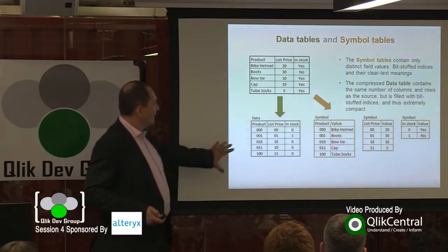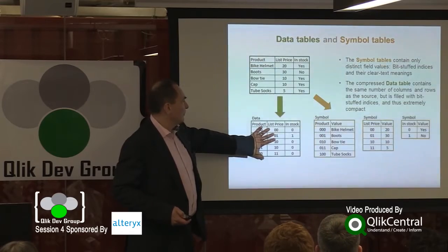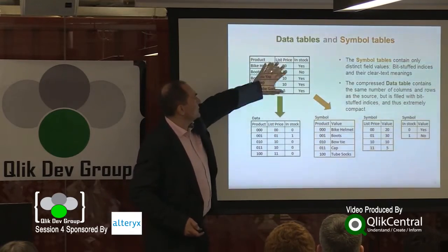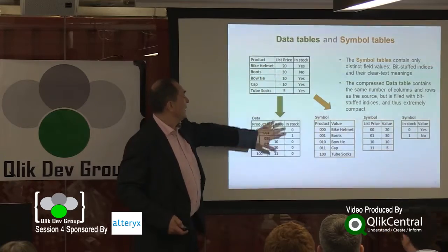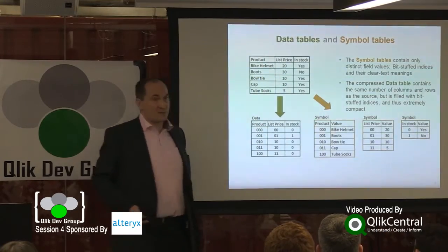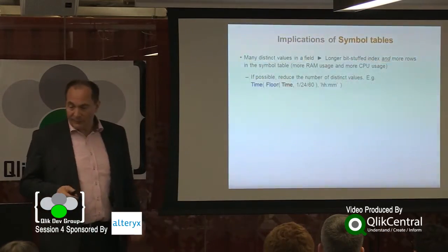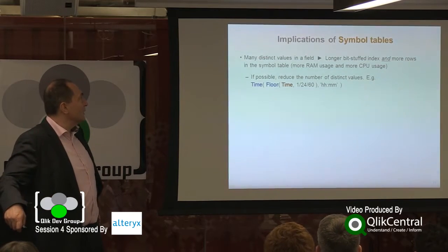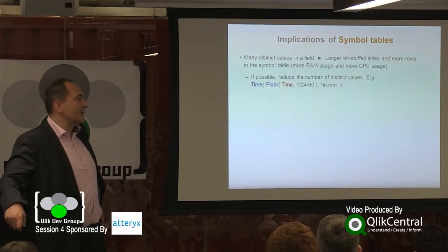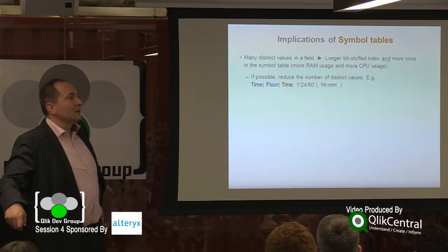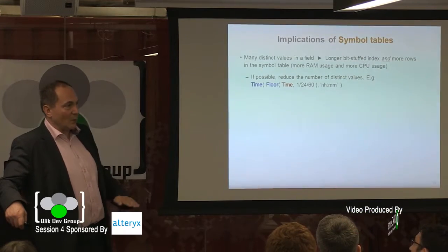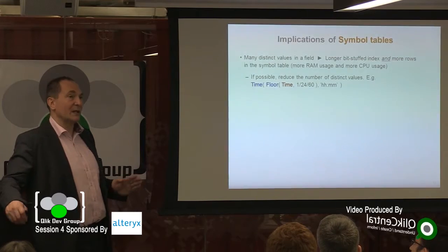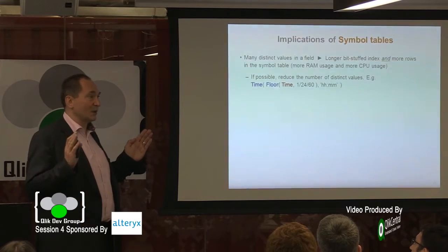In addition, it creates a data table. This data table has the same number of rows as the original, but it just uses the indices. A couple of practical implications of the symbol tables: first of all, if you have many distinct values in the field, then you get many records in the symbol table. But you also get an index which becomes much, much longer.